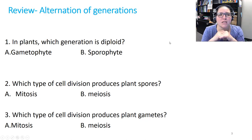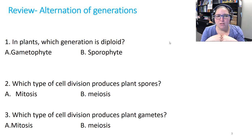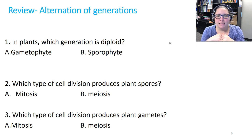To remind yourself about the alternation of generations life cycle or the sporophyte life cycle, we've got a couple of review questions. First of all, in plants, which generation is diploid — the gametophyte generation or the sporophyte? It's going to be the sporophyte generation that is diploid. The gametophyte generation is going to be haploid.